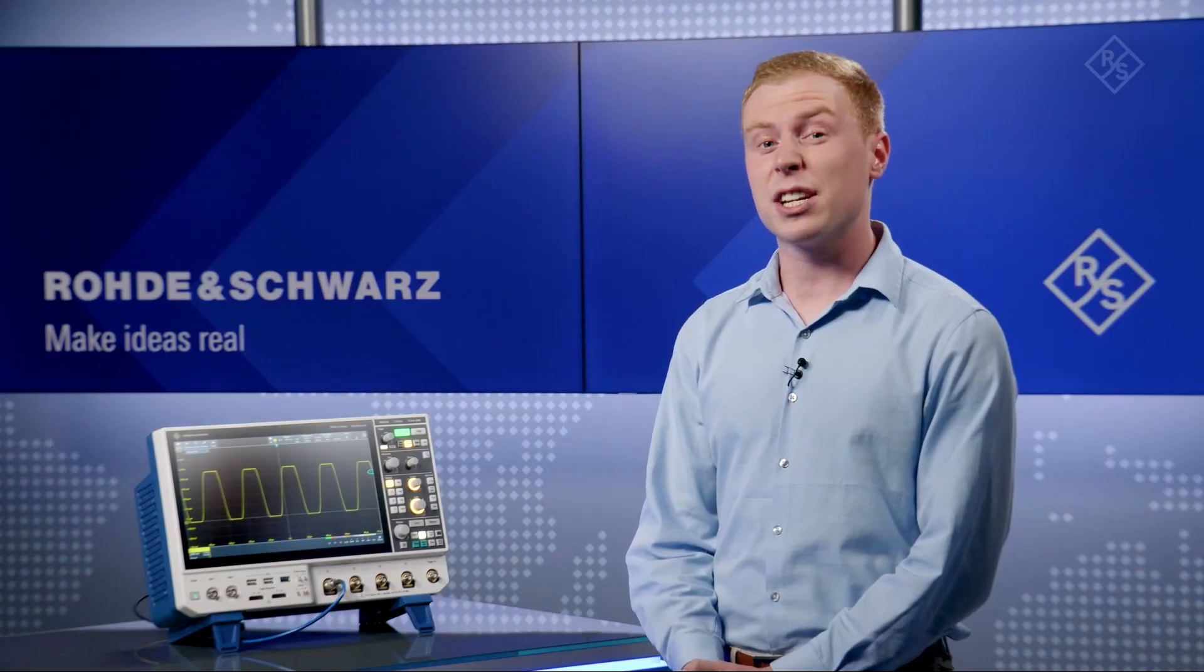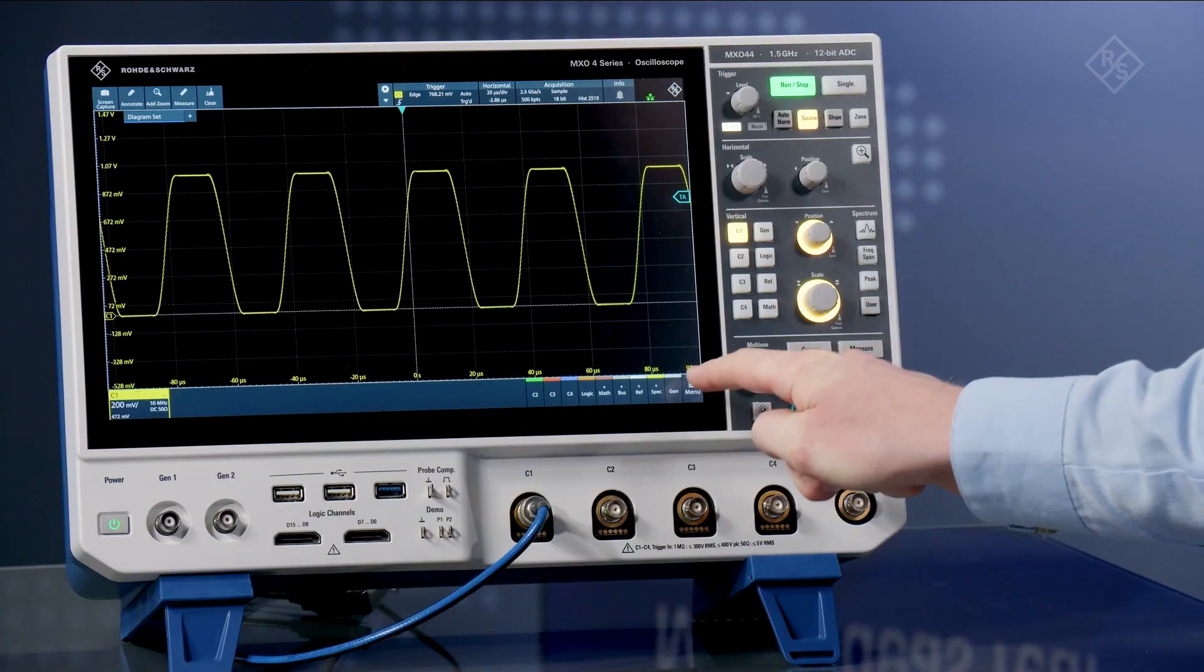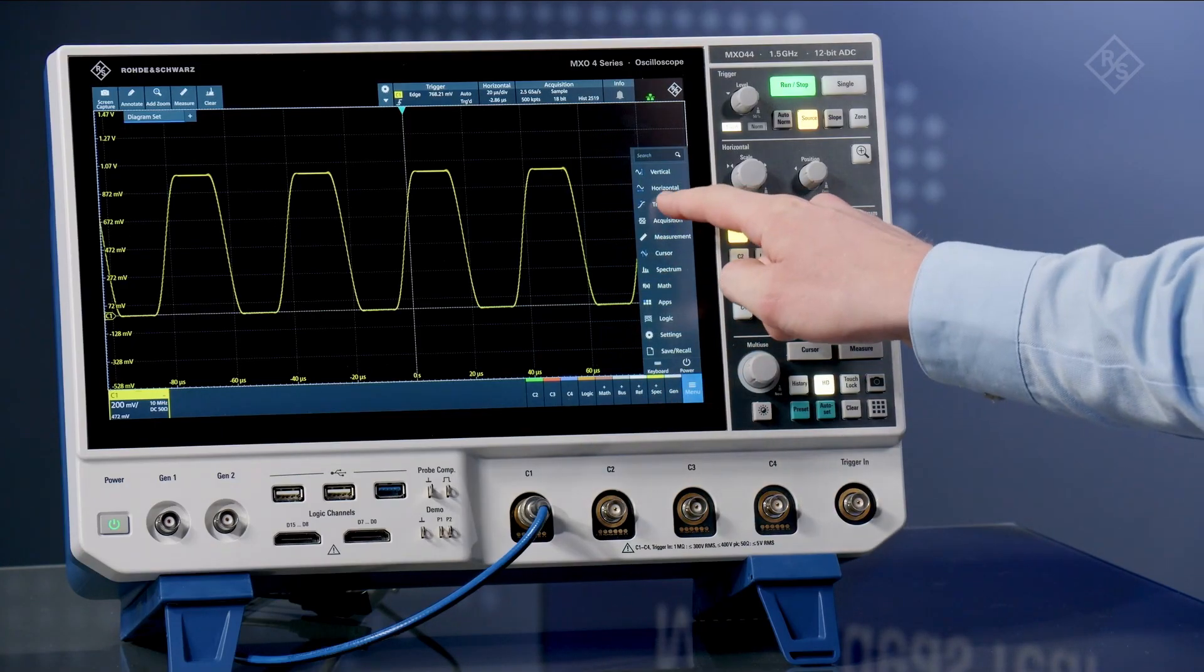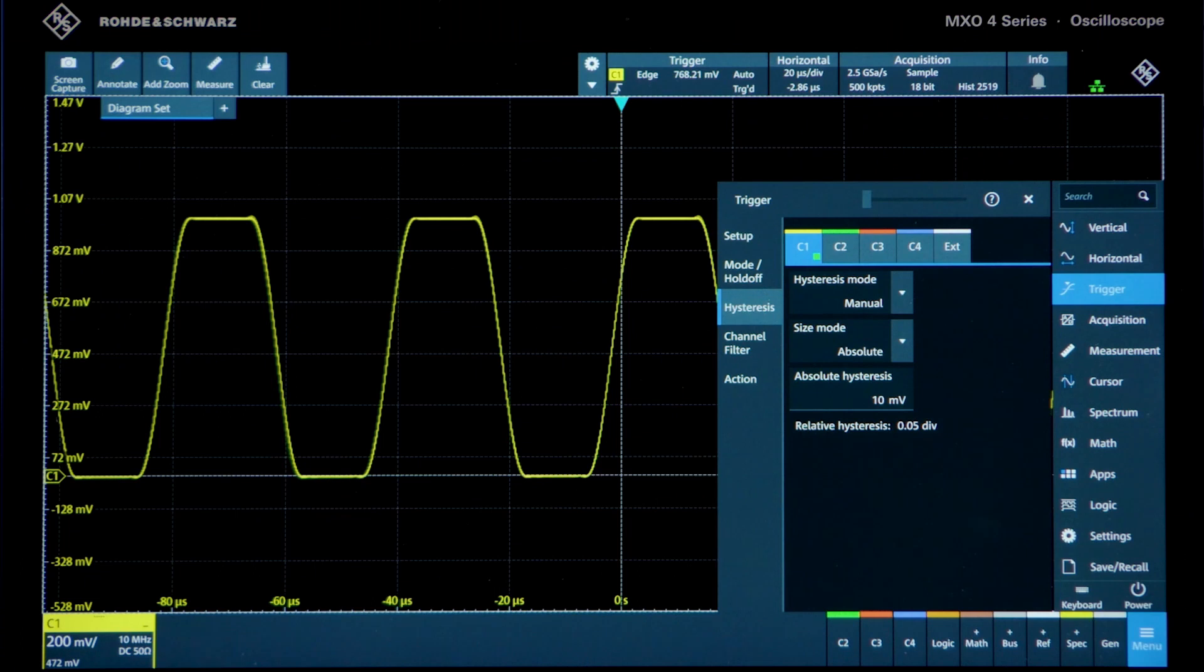Hysteresis is the amount of additional signal swing beyond a trigger level, required for a valid trigger. If you open the menu, select trigger, and then hysteresis, you can see it's currently set at 10 millivolts.